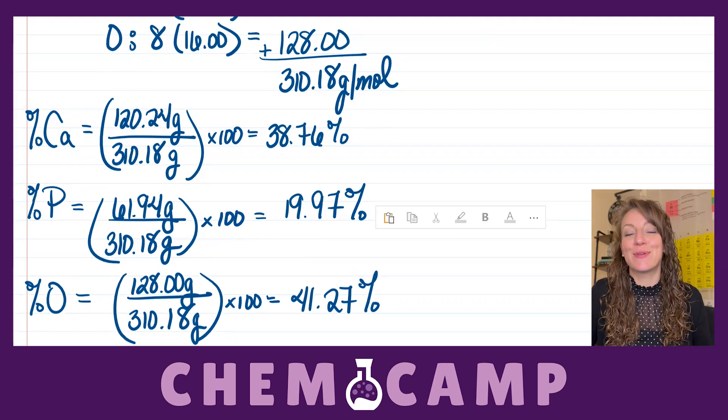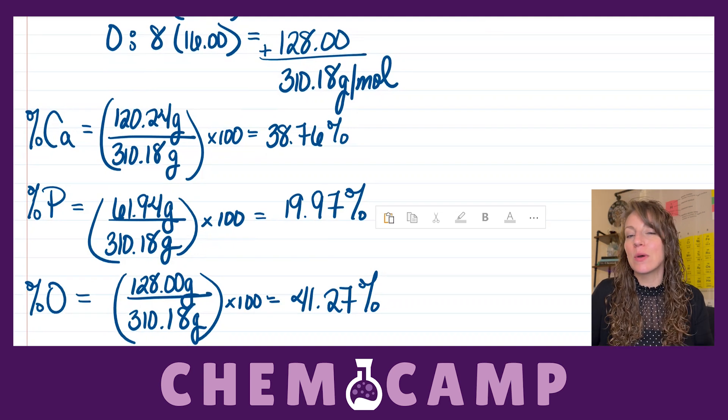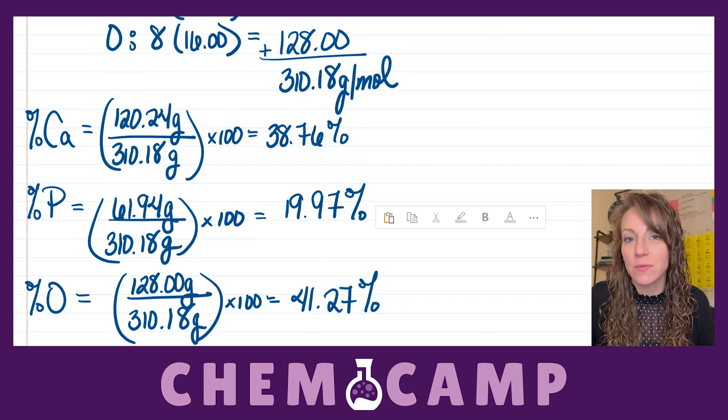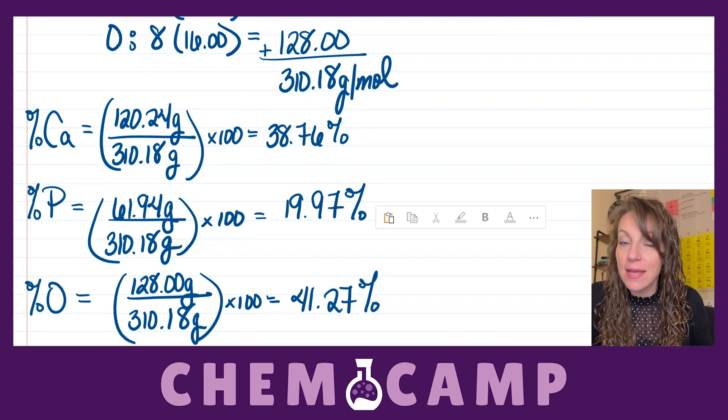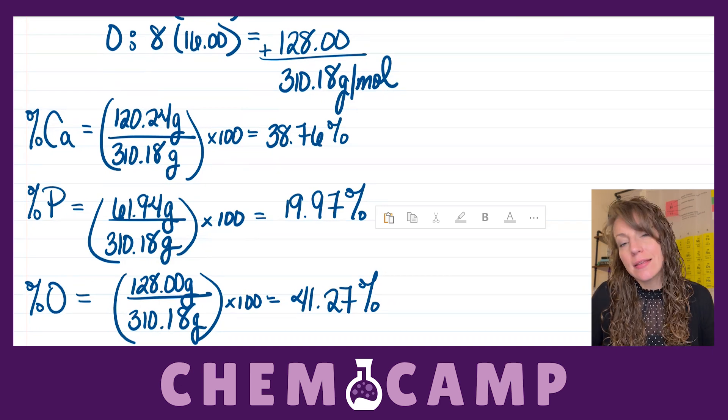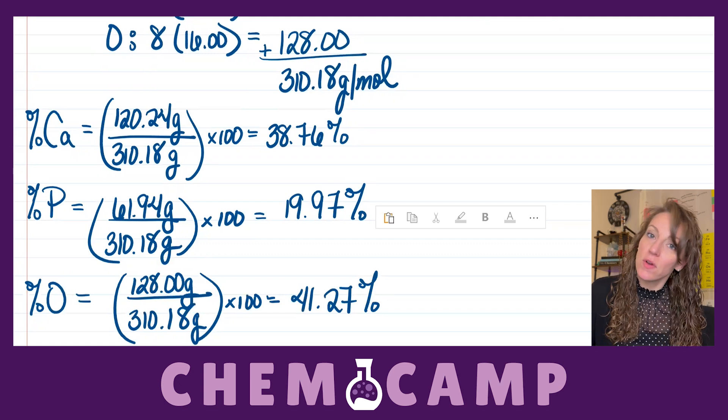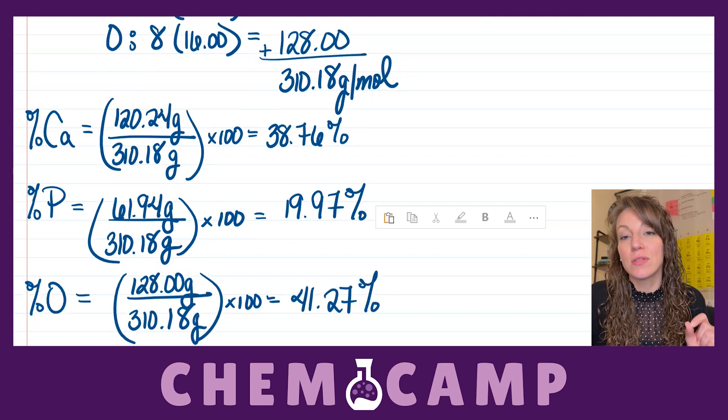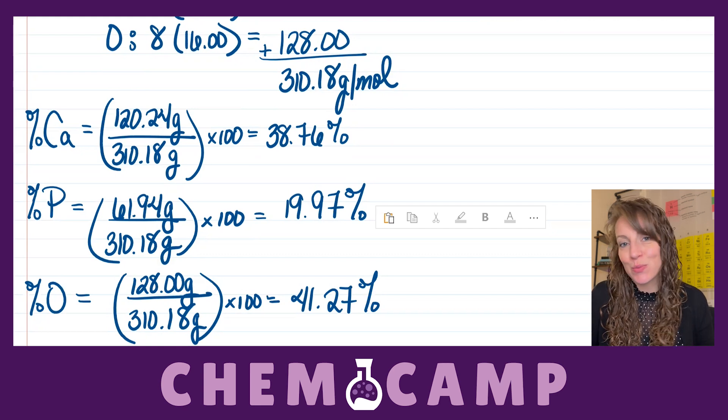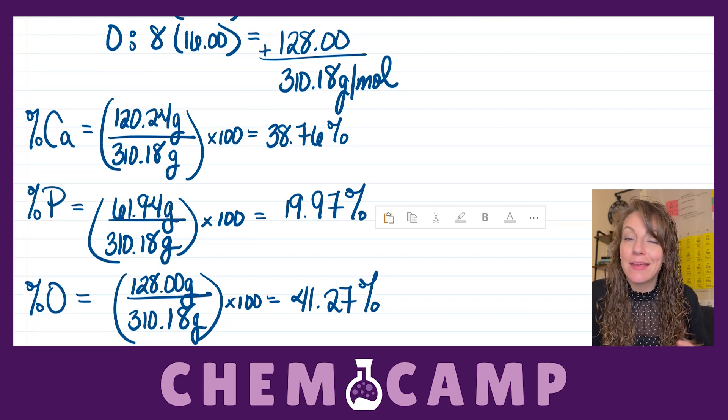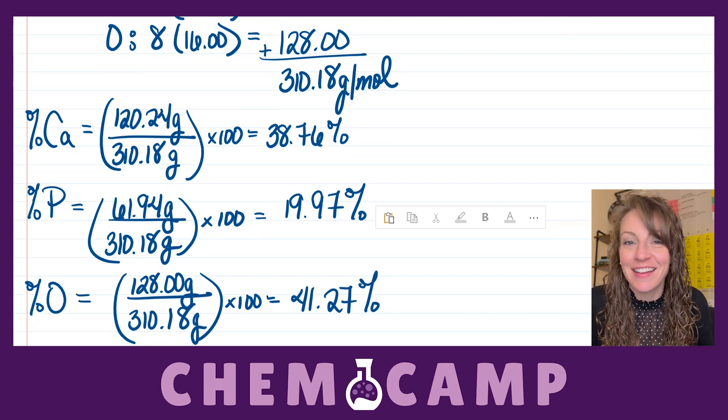So, now I know the percentage by mass of each one of those atoms in that compound, where the atom that contributes the greatest mass, the oxygen, has the highest percent, and vice versa. The atom that contributes the least mass to the compound, the phosphorus, has the lowest percent. Not only that, if you want to check your work, if you add up your percentages, they should be approximately 100.